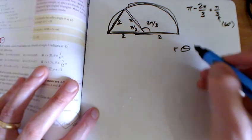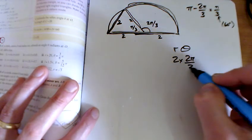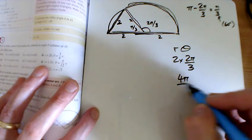And all we need to do now is work out the bit around the outside there. That's just r times theta, so 2 times by 2 pi over 3, which is 4 pi over 3.